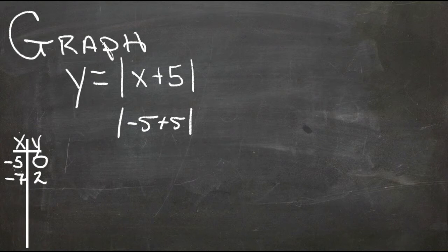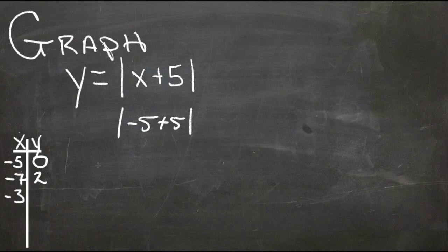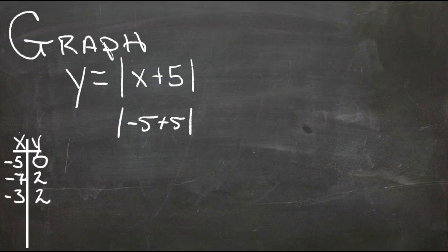And then one that's a little bigger than negative 5, let's say negative 3. When x is negative 3, we get negative 3 plus 5, that's also 2. So now we should have our turnaround point and one number on either side. So let's graph those things.